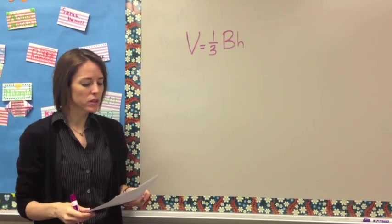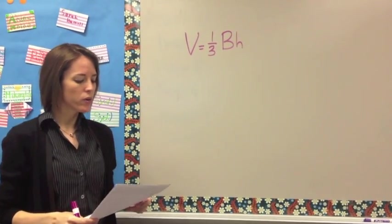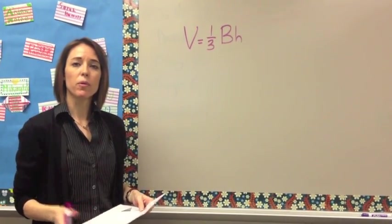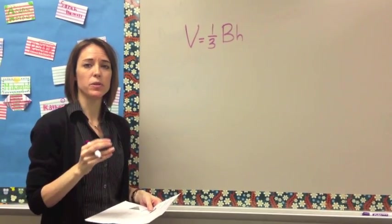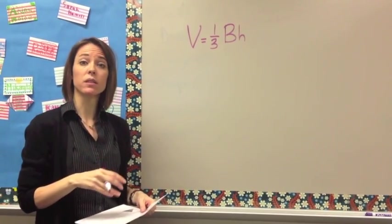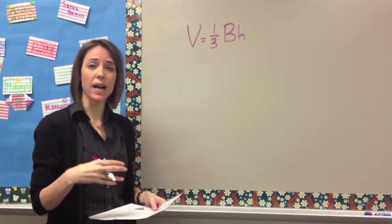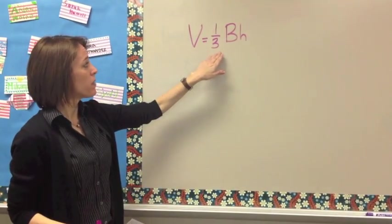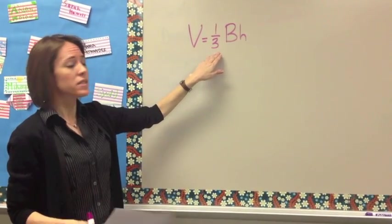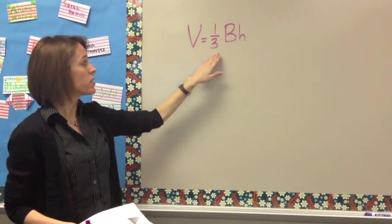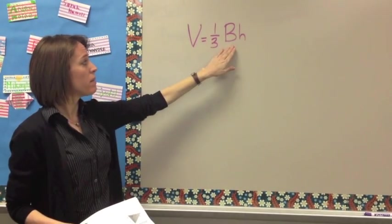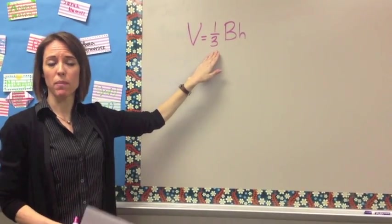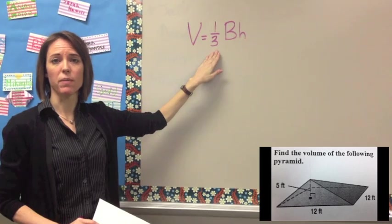We're going to do example one: the volume of a pyramid. The volume of a pyramid is calculated the same way as prisms and cylinders. The only difference is that you divide by 3, because you can fit 3 pyramids into what would be the equivalent prism. So the formula is: area of the base times the height, then multiply by 1/3 or divide by 3.